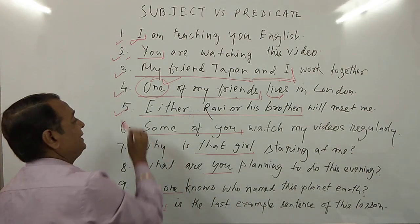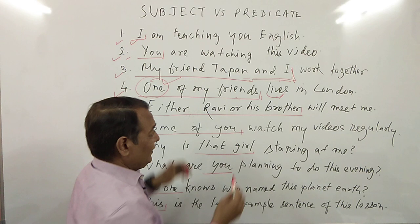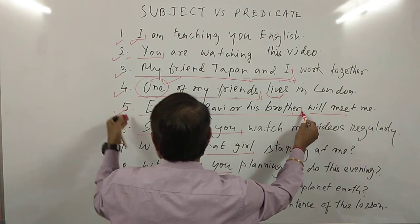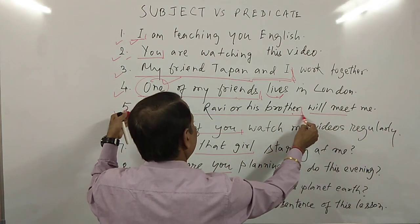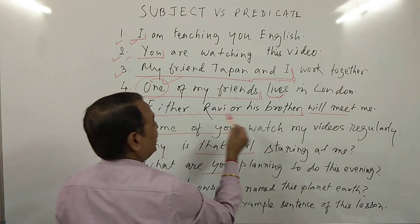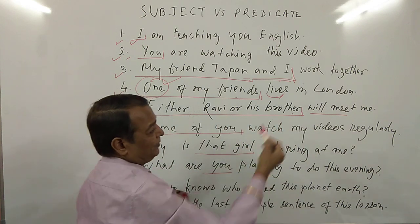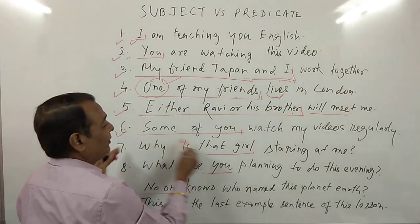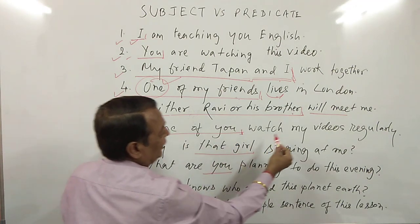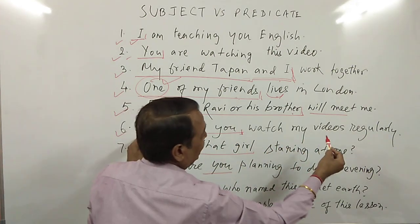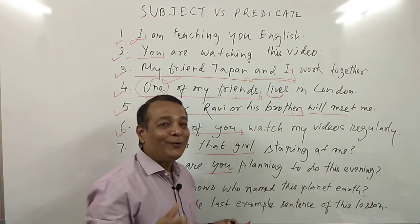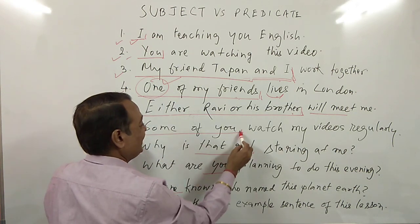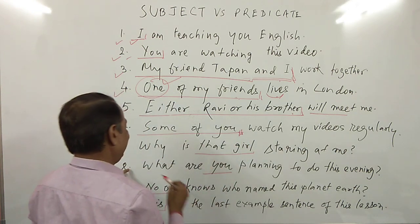Number five: 'Either Ravi or his brother will meet me.' This is the subject in this sentence: 'Either Ravi or his brother.' Number six: 'Some of you watch my videos regularly.' Here, 'some of you' is the subject in this sentence.